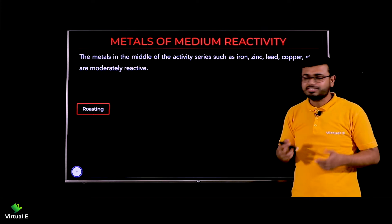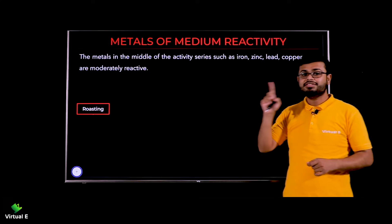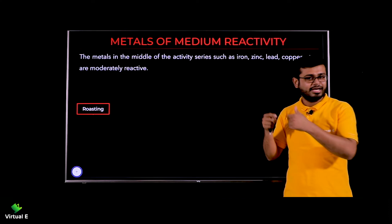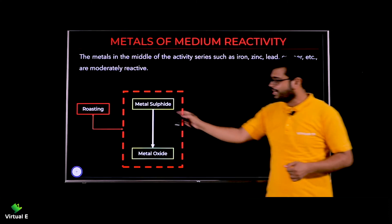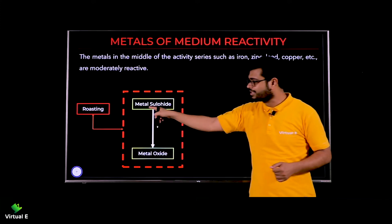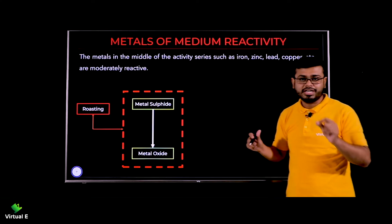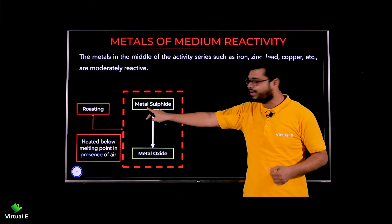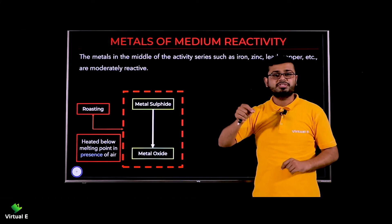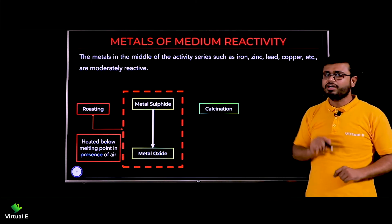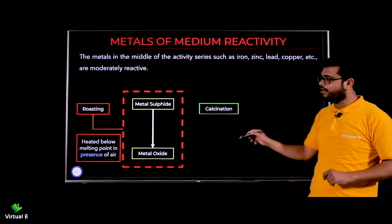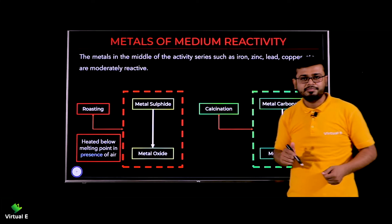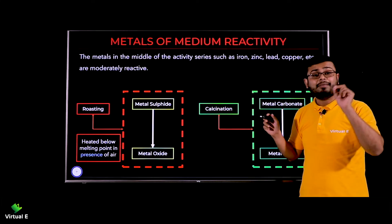Before we discuss the reactions, let's understand two very interesting terms: roasting and calcination. In roasting, we have a metal sulfide and we convert it into a metal oxide — you heat it below the melting point in the presence of air. In calcination, you have a metal carbonate and you convert it into a metal oxide, but here you heat it below the melting point in the absence of air.